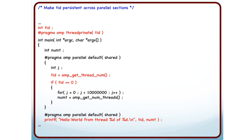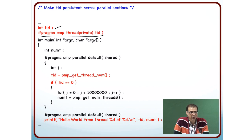Here is another way to save those multiple calls to omp_get_thread_num. This is something called thread private variables. What you can do is make variables persistent across parallel sections. This is a variable tid and you declare it to be a thread private variable using '#pragma omp threadprivate' followed by the variable name.